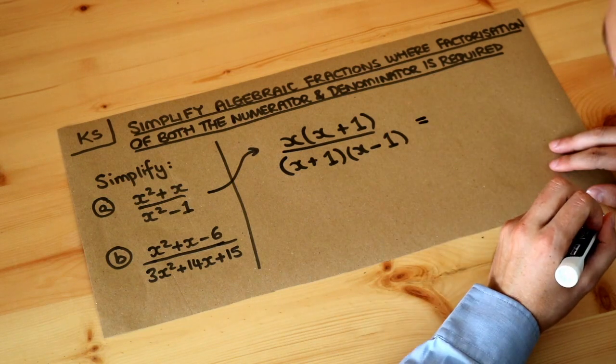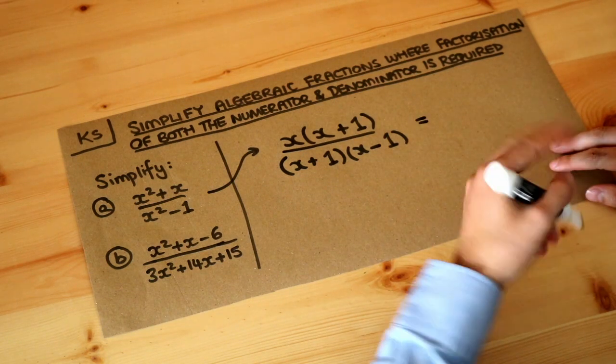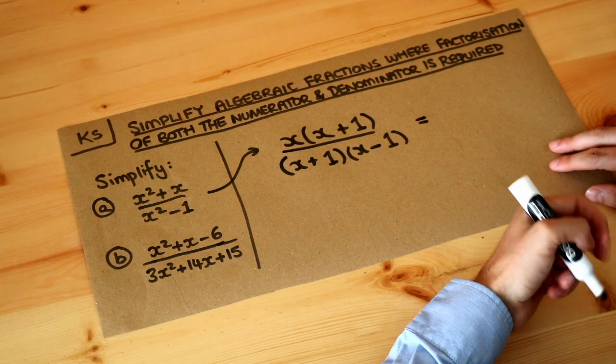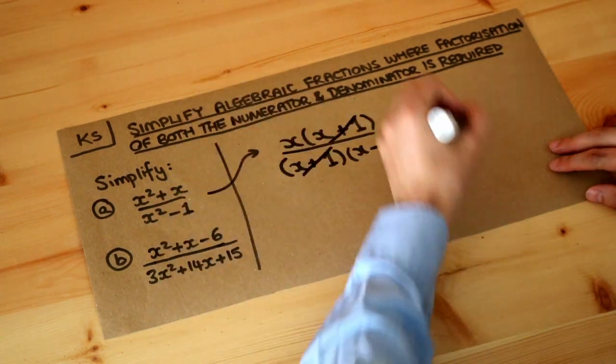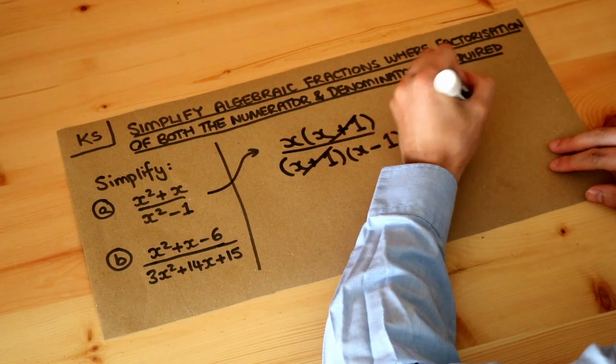And then we look what's common top and bottom. What can we divide the top and bottom of our fraction by? Well there seems to be an x plus one common to the top and bottom, so we can cross those out and that gives you x over x minus one.